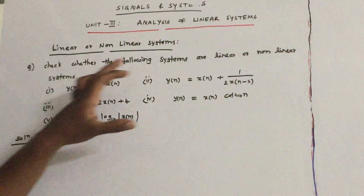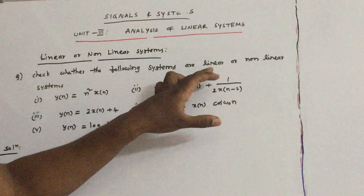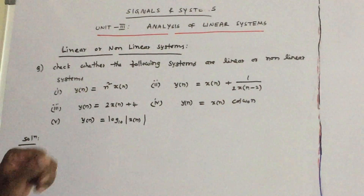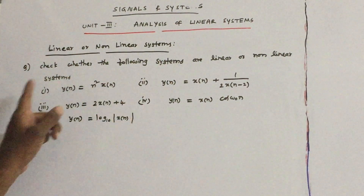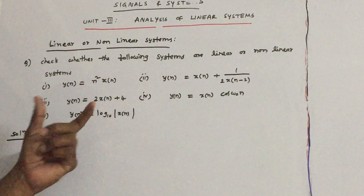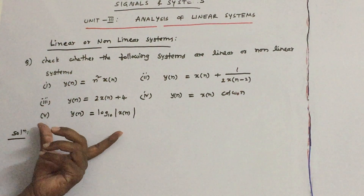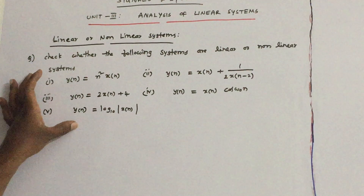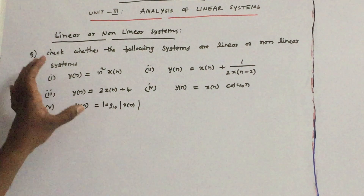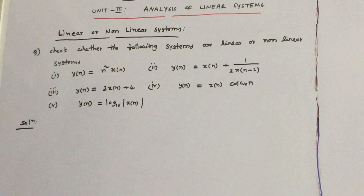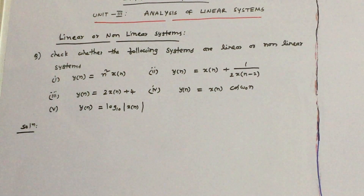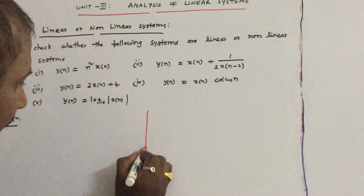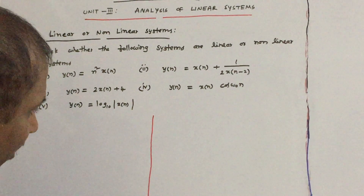Let us see some more working examples on linear or non-linear systems. Here I have given 1, 2, 3, 4, 5 systems. Let us check out whether these systems are linear or non-linear systems and go through them one by one.